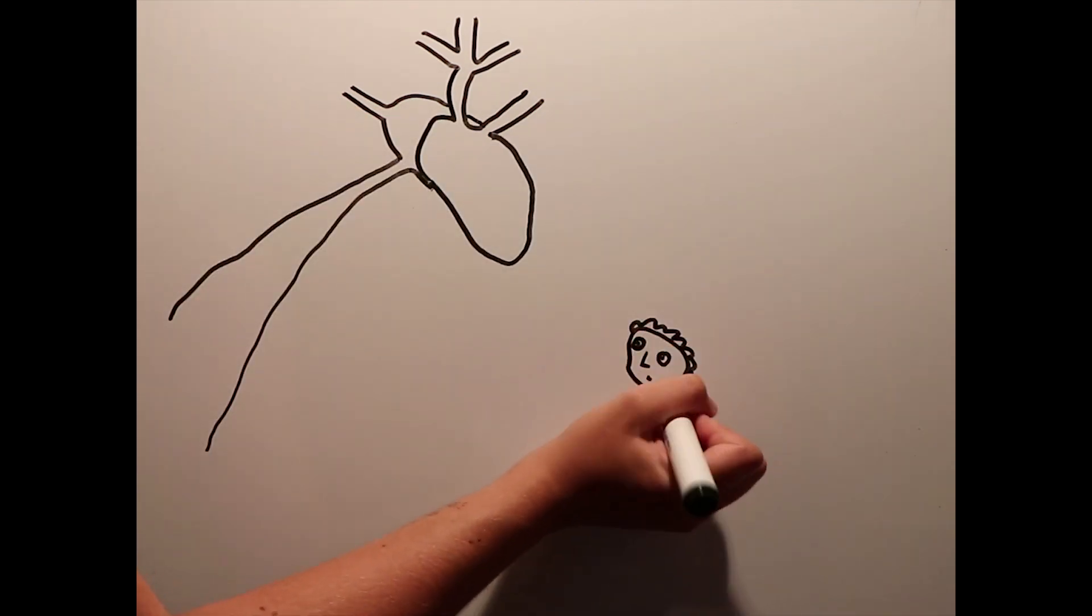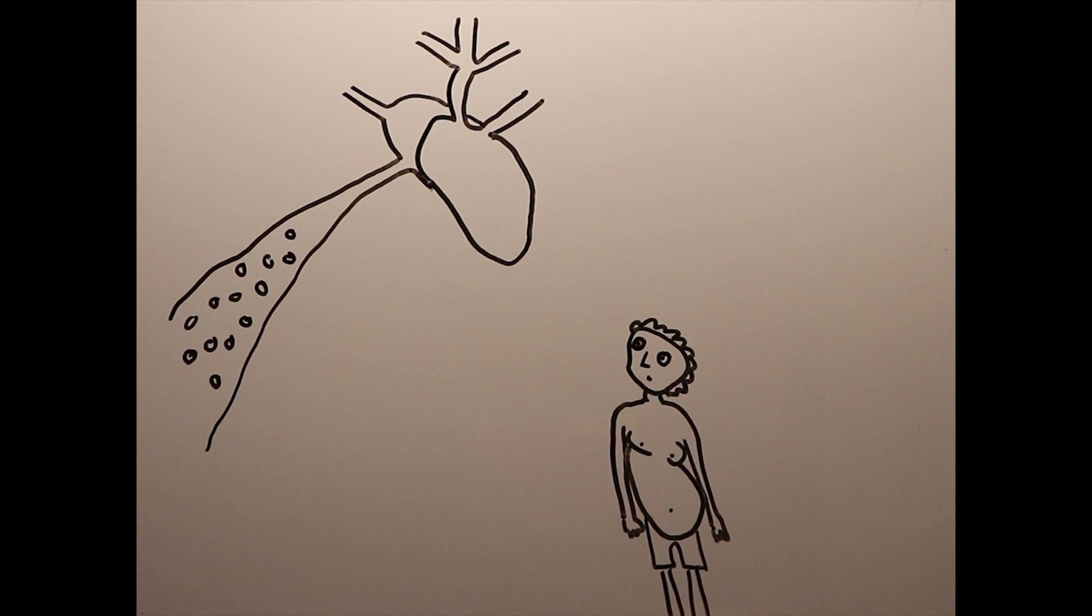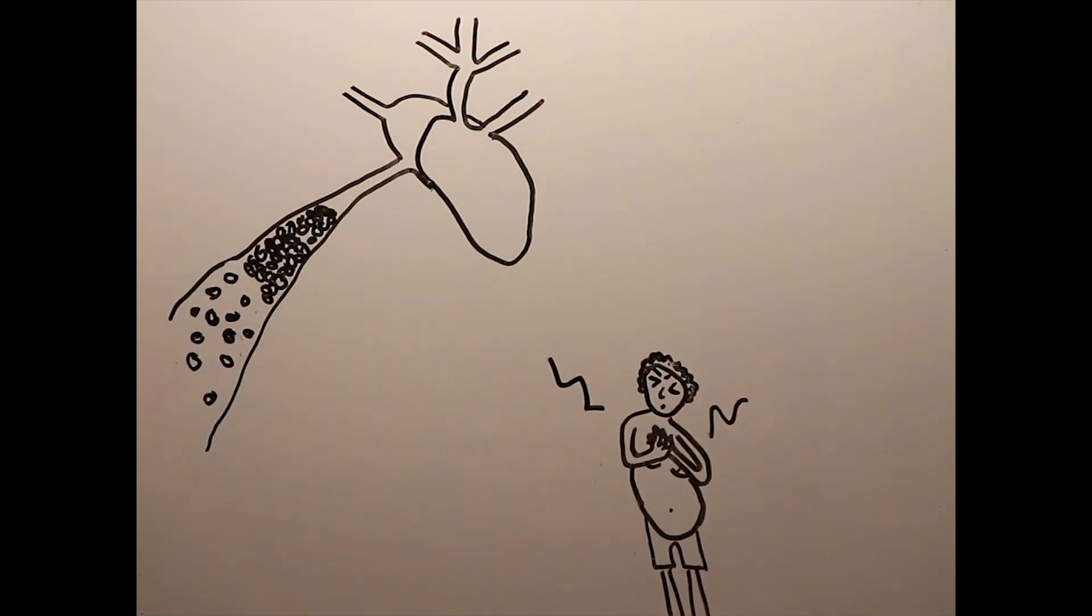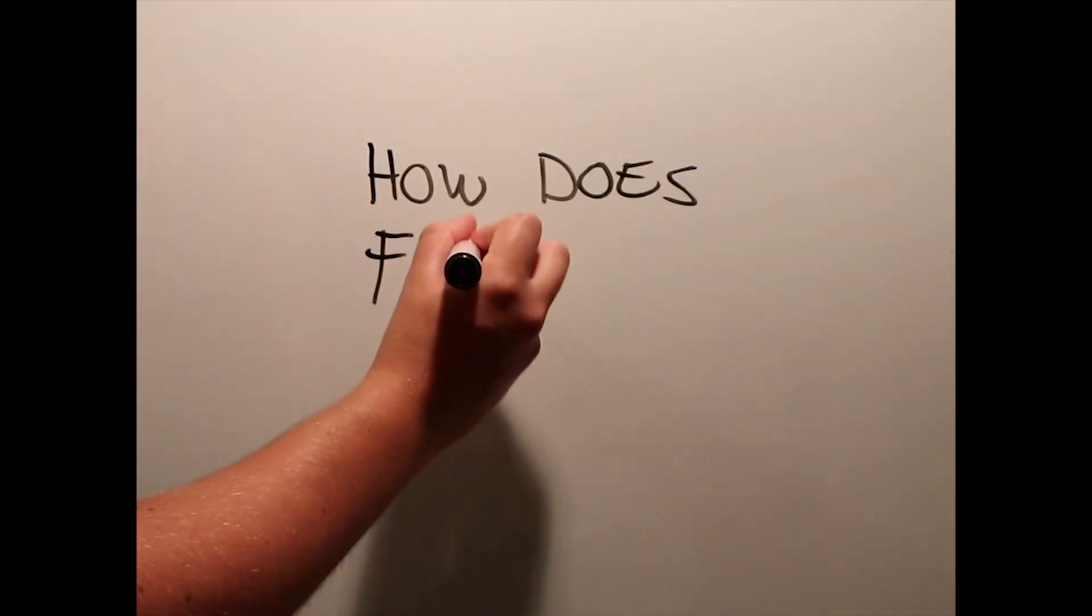For example, fat accumulation in a blood vessel or around the heart, which could lead to a heart attack. So we ask the question, how does fat tissue grow?